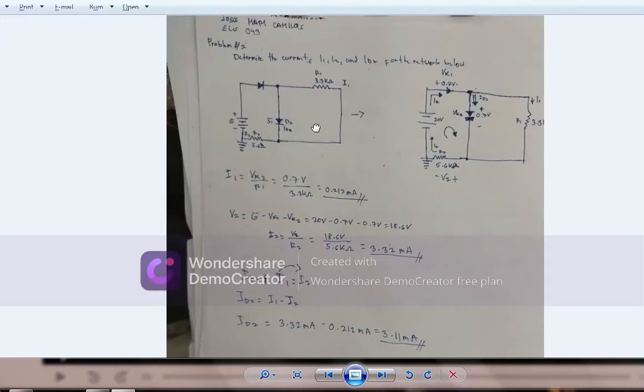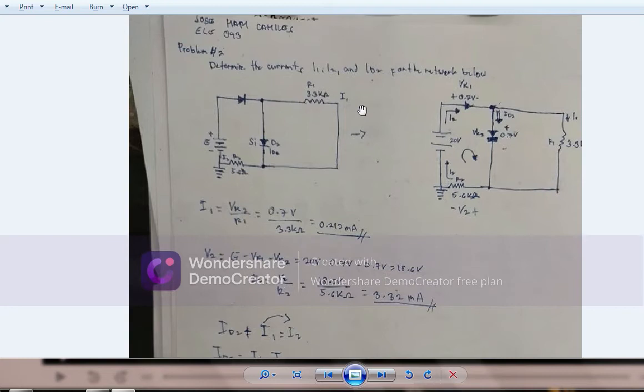Hello guys, we are set to answer problem number two, which is to determine the currents i1, i2, and id2 for the network below. So here is our diagram. The first step we need to do is identify the diode if it is turned on or turned off.